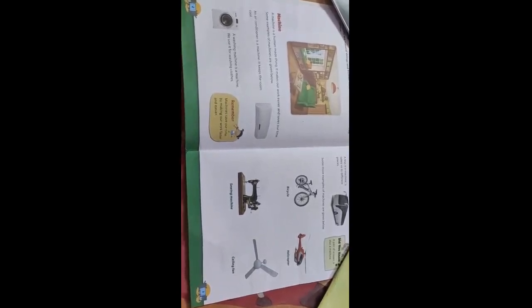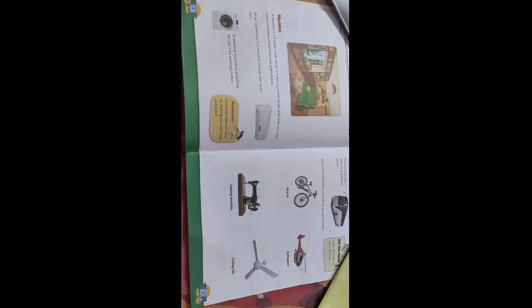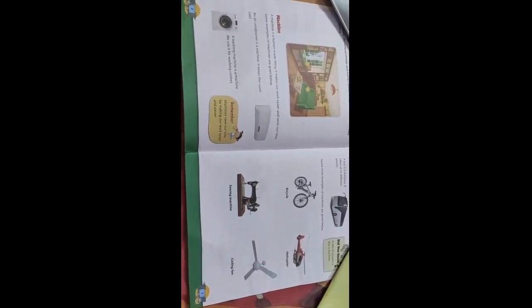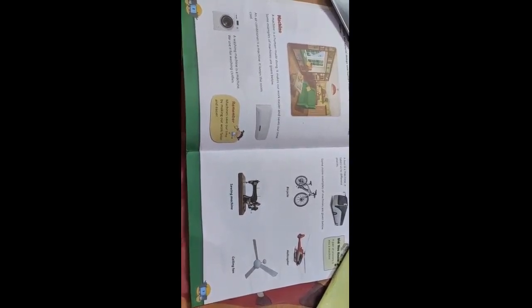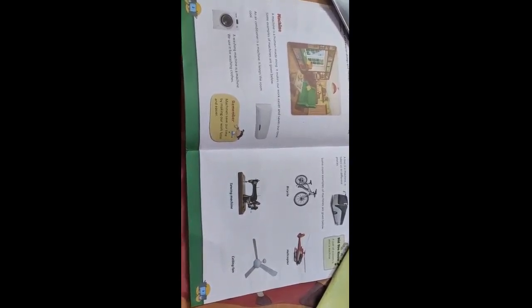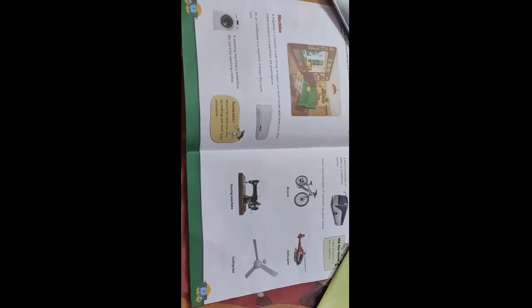Next, we have learnt machines around us. The machines are the man made things who makes our work easier and saves our time. We have seen in our previous class different types of machines and how they are useful in our day to day life.